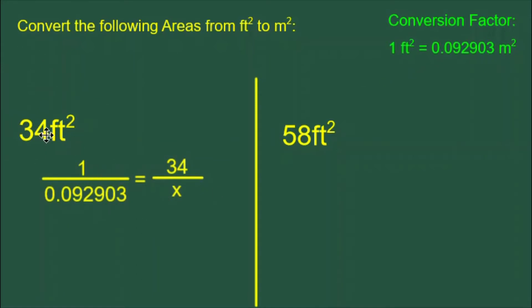On the right side, the 34 feet squared in the question has to go on the top, so that both of the feet squared values are on the top. x goes in our last remaining spot.